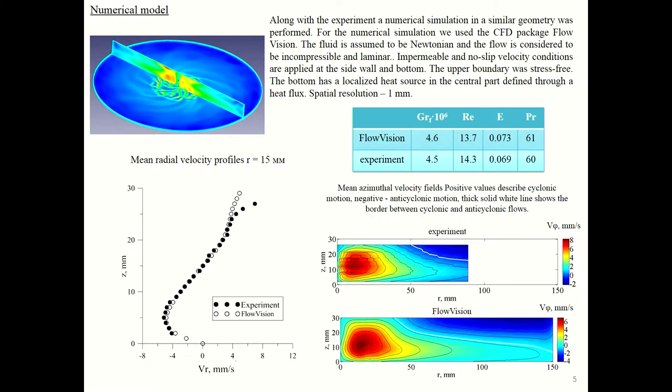There's a table with the values of non-dimensional parameters for numerical simulation and experiment. For verification we received the vertical profile of radial velocity, mean radial velocity, and fields of azimuthal velocity averaging in azimuthal direction. One can see a good agreement quantitatively.